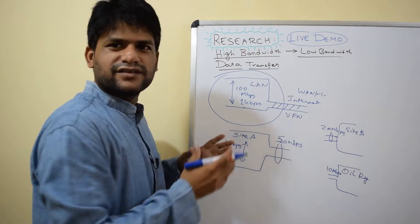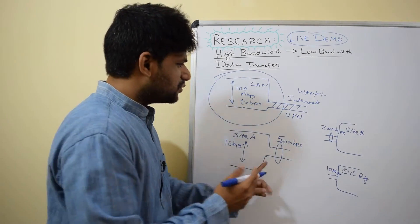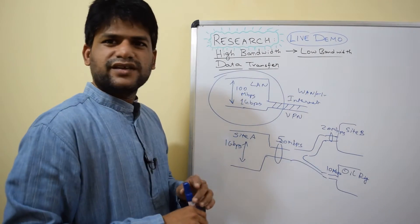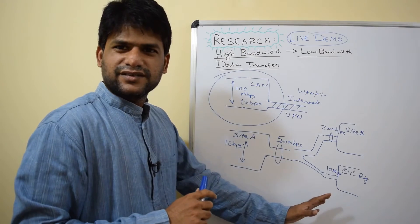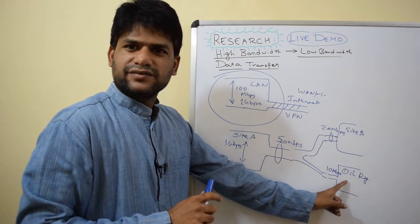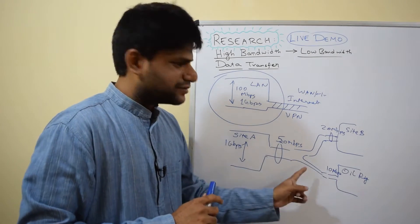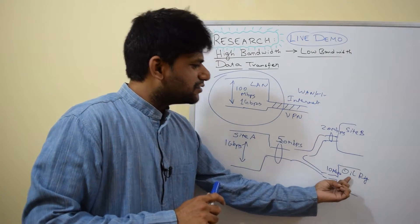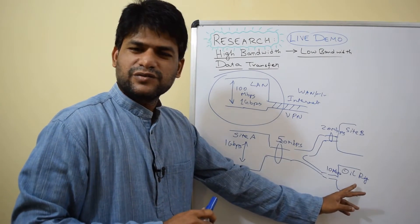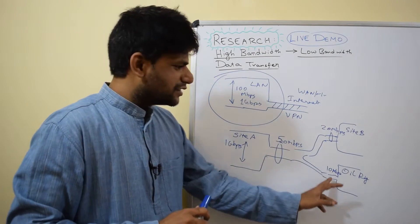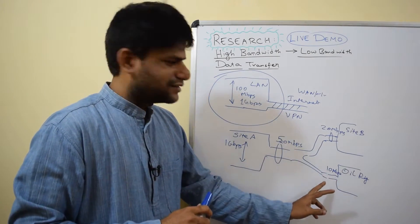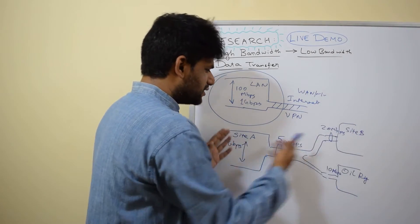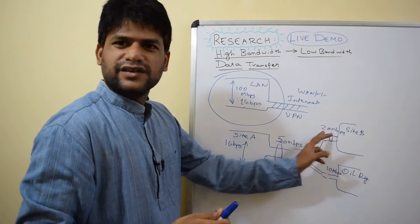Assume all these offices are connected in some way. Strange things happen in this scenario: when you download data from site A to the oil rig, it is limited by the 10 Mbps network. Vice versa, sensor data downloaded from the oil rig to the main office is again rate-limited by that 10 Mbps link — that's the bottleneck. Similarly, data transferring from site B to site A is rate-limited by the 20 Mbps access.